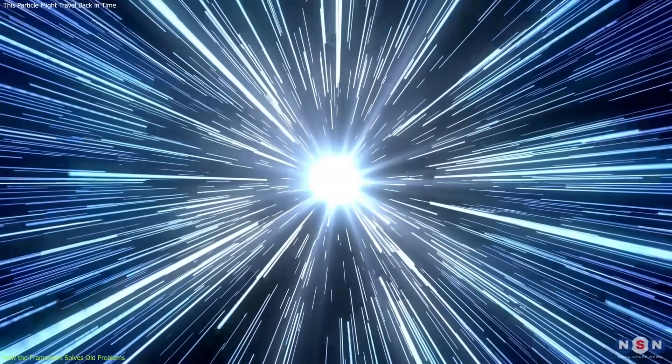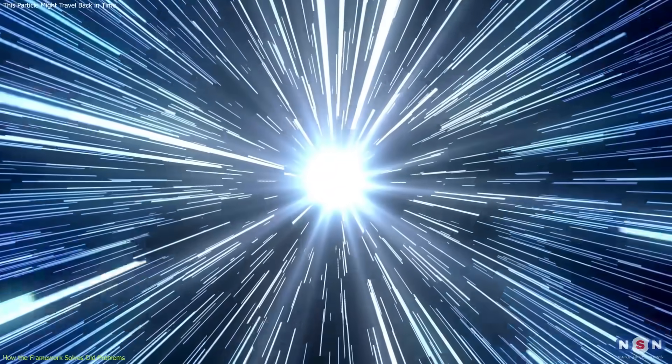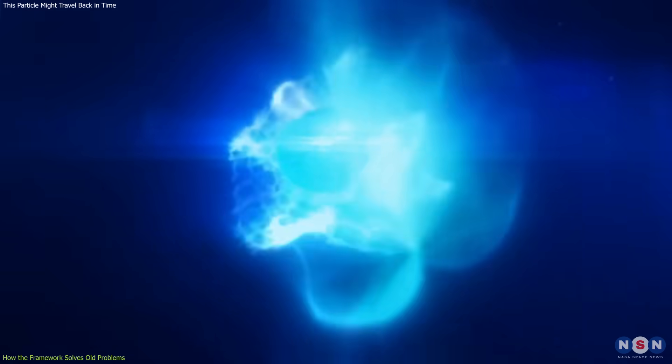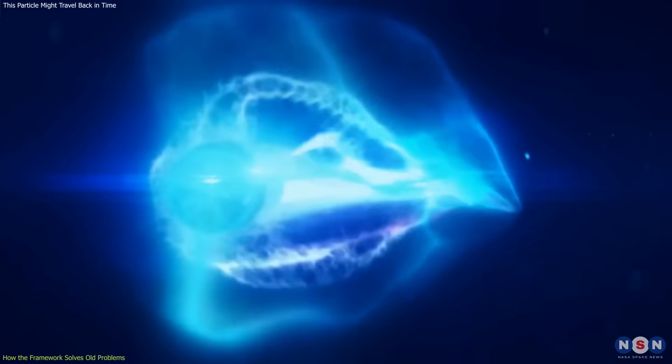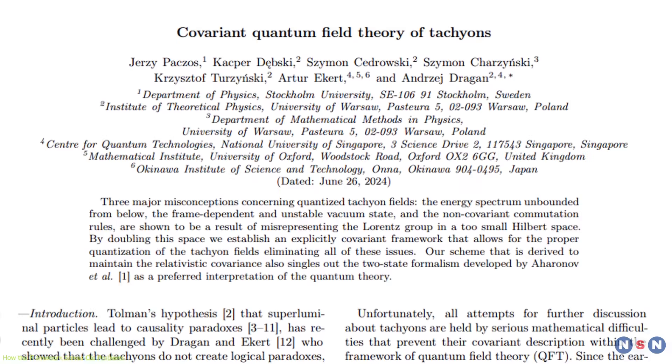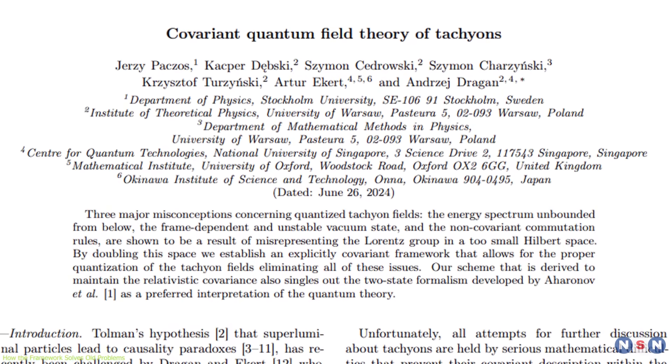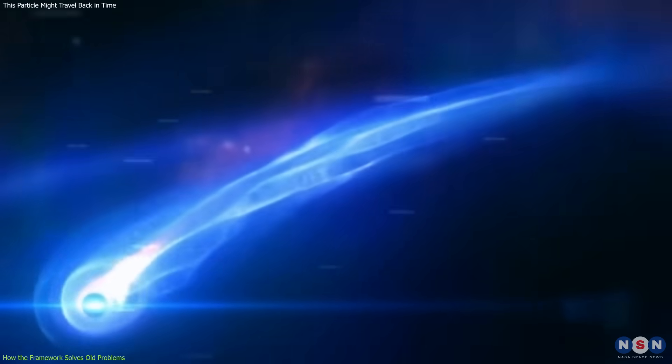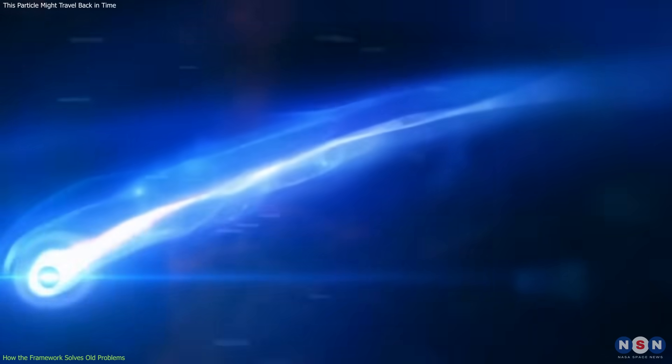Another advantage is energy stability. Previous tachyon models often resulted in runaway energy, particles gaining infinite kinetic energy the closer they came to light speed from above. But the new framework uses improved propagators, mathematical tools that describe particle behavior across spacetime, to limit energy to finite, stable values.